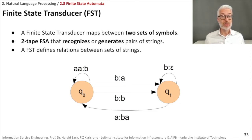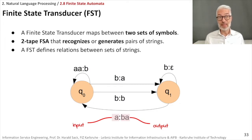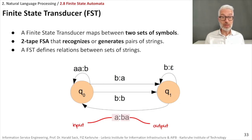We have the input and the second string is the output. If you use a finite state transducer as a kind of translator function, it maps input to output. It could also be a two-taped finite state automaton that accepts something on two tapes, but here the second tape is defined as an output tape. If you write this down as a graph, you have the input and output separated by a colon — this is simply convention.